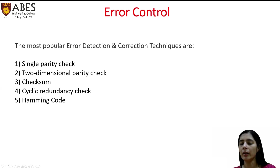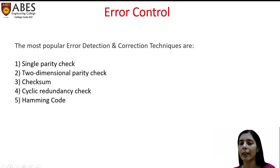In lectures one, two, and three, we will discuss various error detection and correction techniques. There are five techniques in total — only one is used for error correction while the rest are used for error detection. With the help of Hamming code, we can correct errors, but only single-bit errors can be corrected.